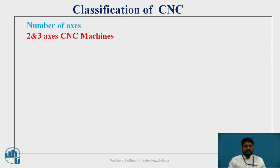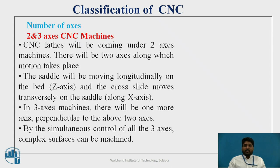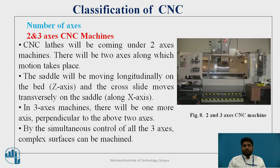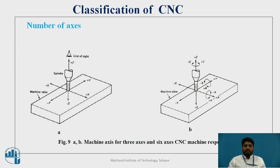The next classification is by number of axes. For 2 and 3 axis CNC machines: CNC lathe machines fall under 2-axis machines, with motion along the Z axis (saddle moves longitudinally on the bed) and X axis (cross slide moves transversely on the saddle). In a 3-axis machine, there is one more axis perpendicular to these two. By simultaneous control of all 3 axes, complex surfaces can be machined. Figure 8 shows the 2 and 3 axis CNC machine with X, Y, and Z axes. Figure 9 shows A and B representing the 3-axis and 6-axis CNC machines respectively.